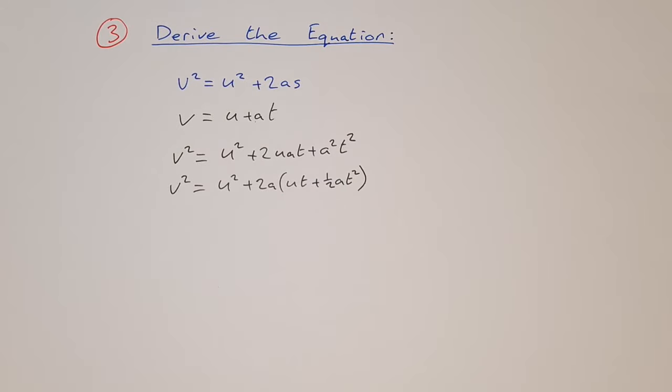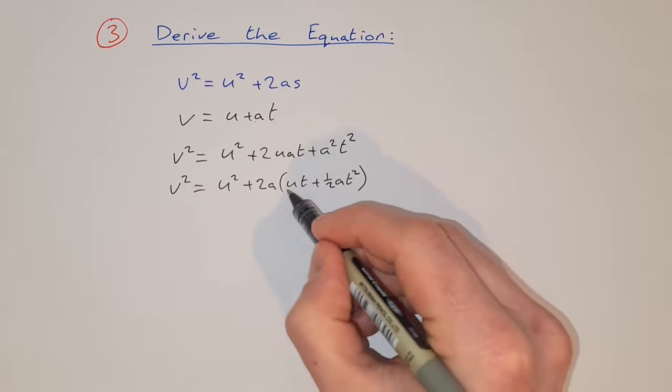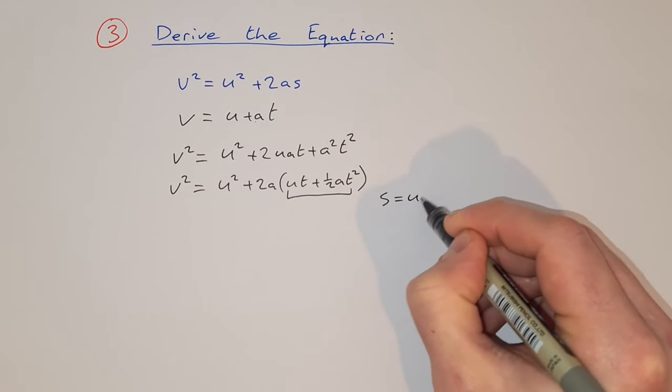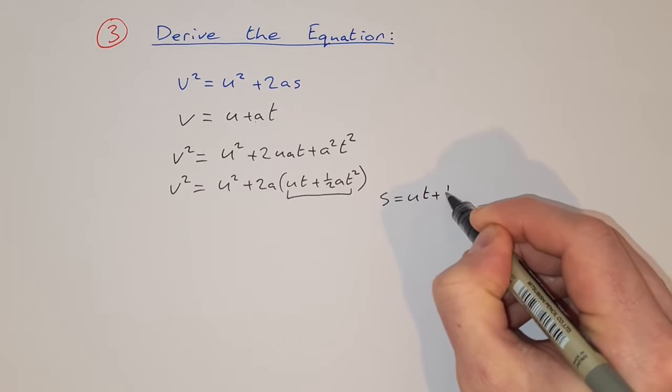Now we know that ut plus a half at squared, this bit here, is equal to s. So s is equal to ut plus a half at squared.